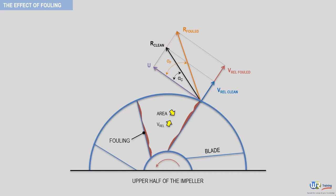Now let's get rid of the vectors u, v relative clean, and v relative fouled, as we don't need them anymore for the discussion that follows, and leave only r clean and r fouled.